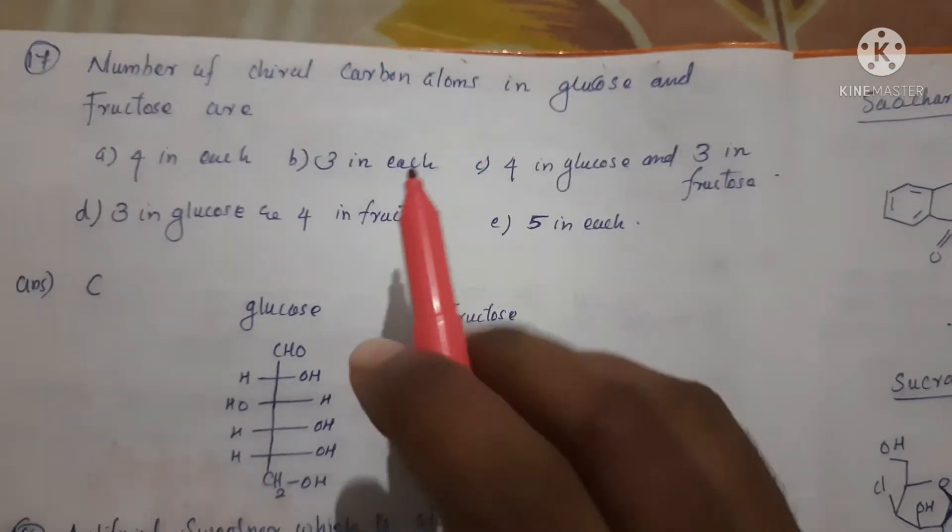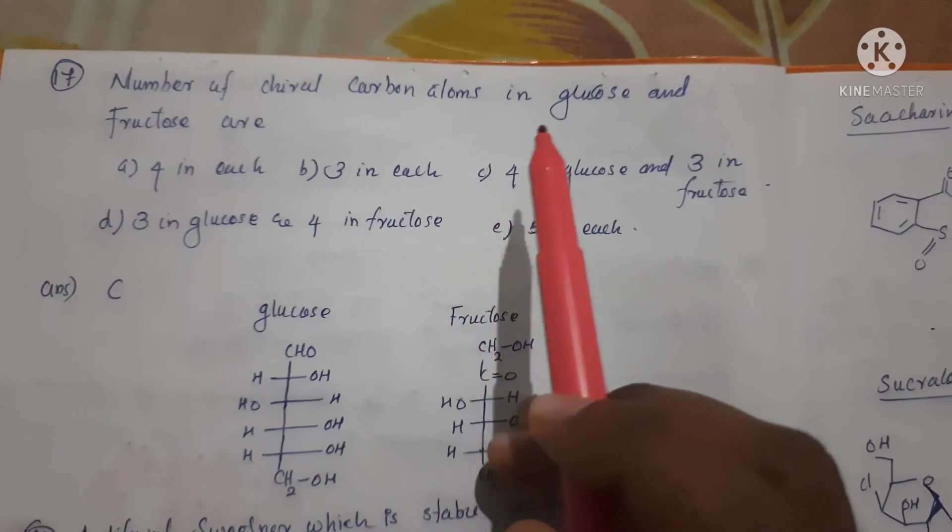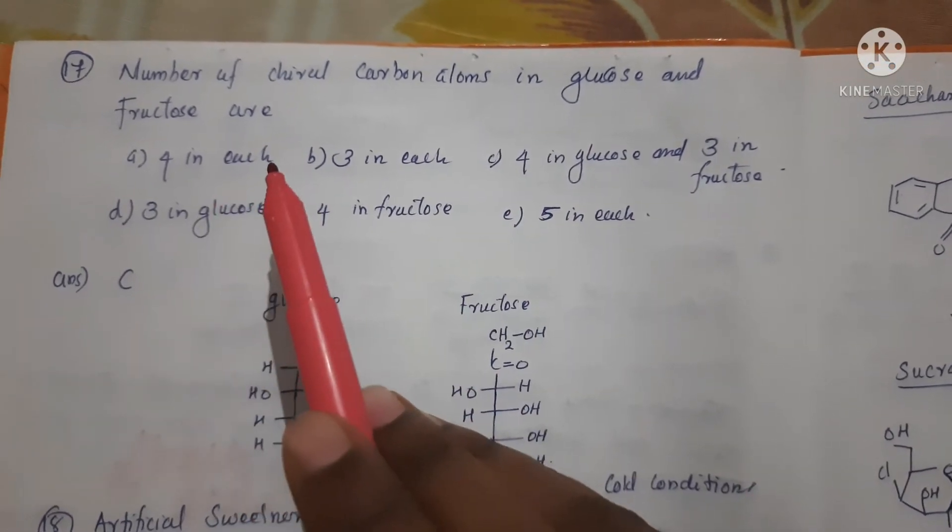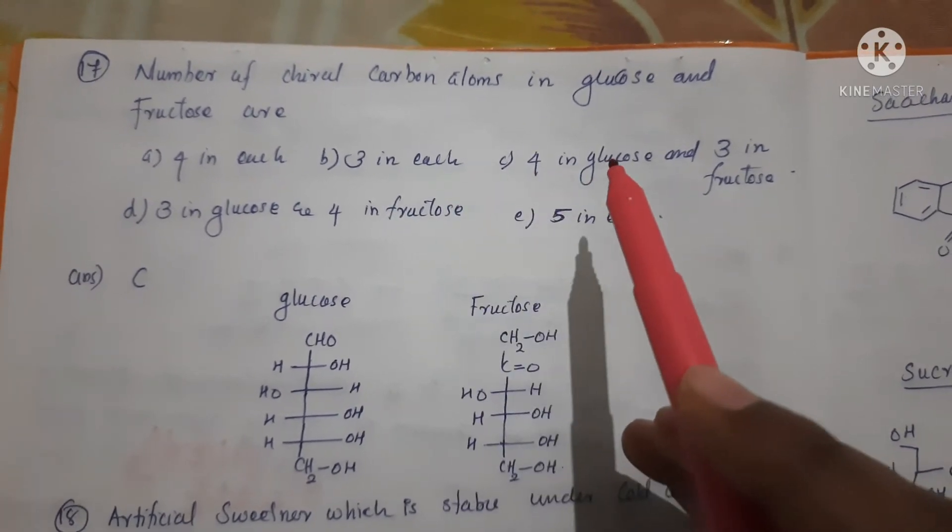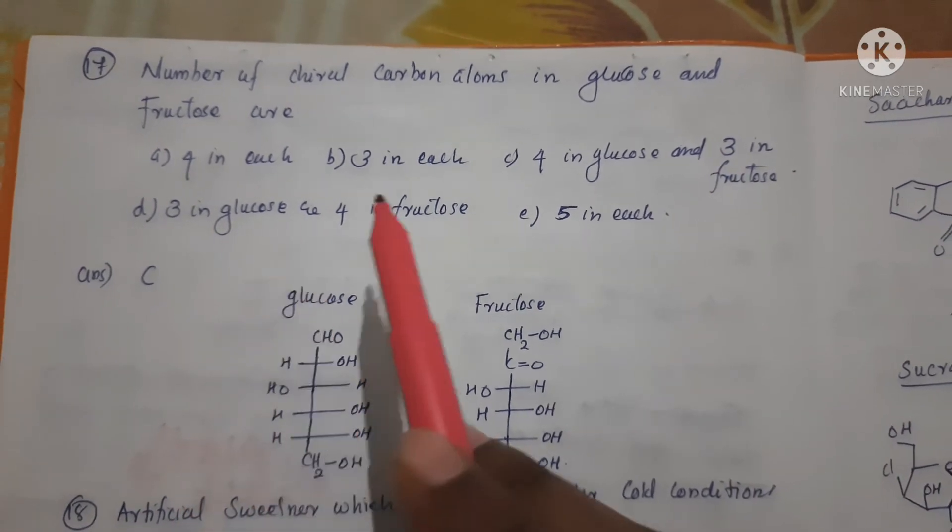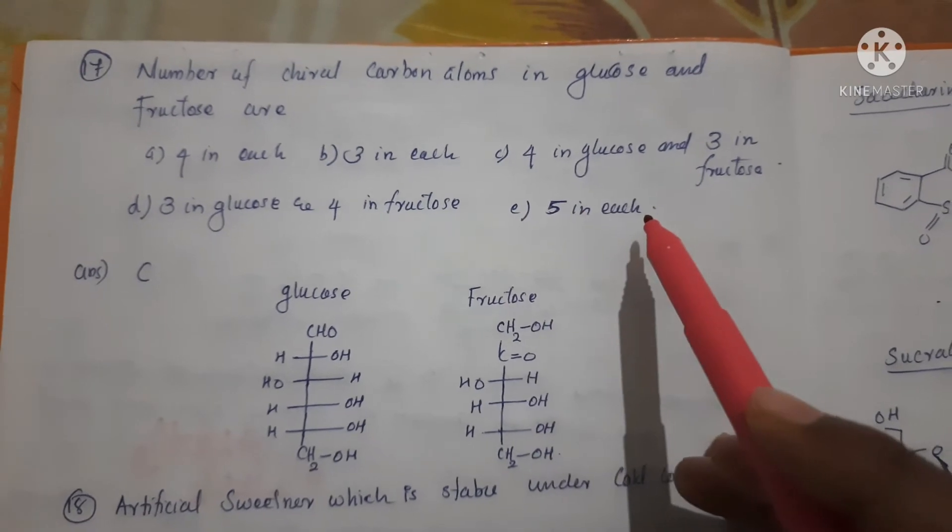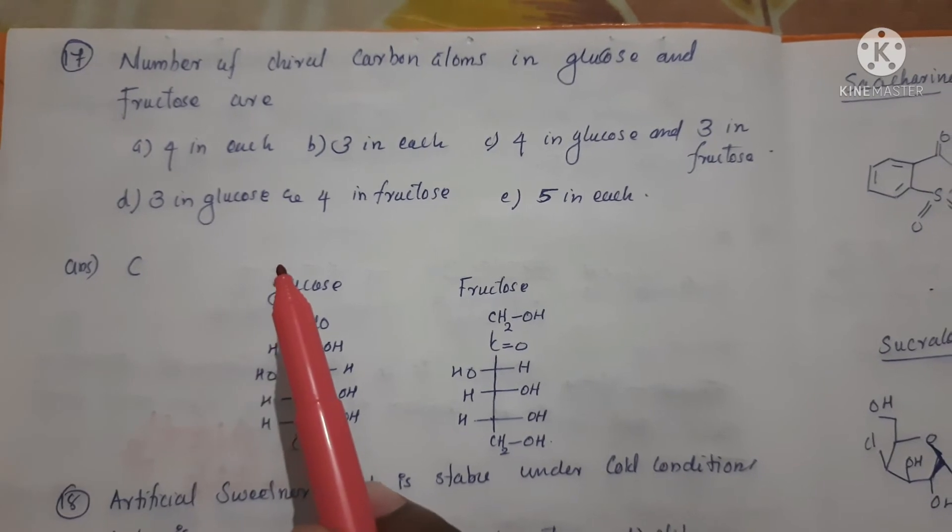Next question: the number of chiral carbon atoms in glucose and fructose are - Option A: 4 in each, Option B: 3 in each, Option C: 4 in glucose and 3 in fructose, Option D: 3 in glucose and 4 in fructose, and Option E: 5 in each. The correct answer is Option C, 4 in glucose and 3 in fructose.